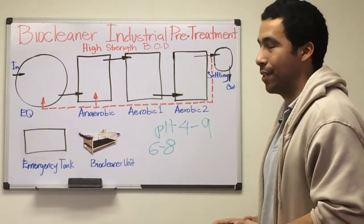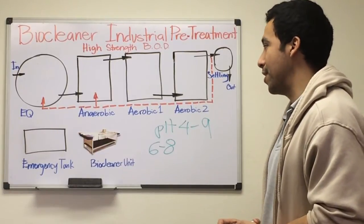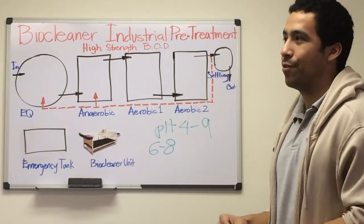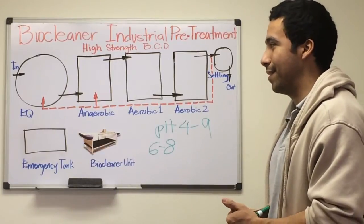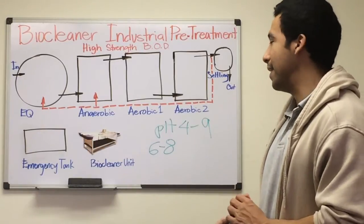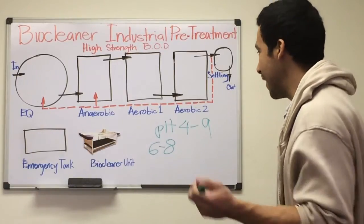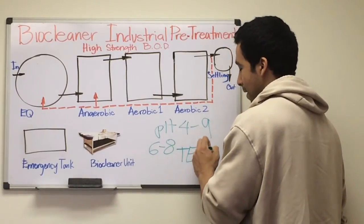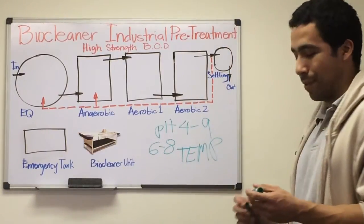This allows our system to survive. Usually they'll have some type of neutralization depending on the industrial process in order to discharge to pH limits. In addition, our second variable we consider is temperature. For our system, optimal temperatures are between 25 degrees Celsius to 32 degrees Celsius.